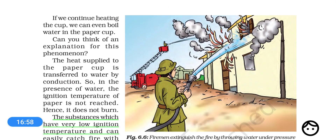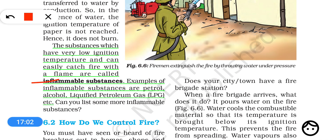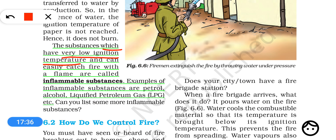Lastly, we are going to learn about inflammable substances. Some substances like LPG and petrol burn very easily because they have a very low ignition temperature. Even a small lighter can burn LPG, and a burning matchstick near petrol can ignite it. The substances that have very low ignition temperature, catch fire very easily, and burn with a flame are called inflammable substances. LPG, petrol, diesel, and CNG are all inflammable substances.